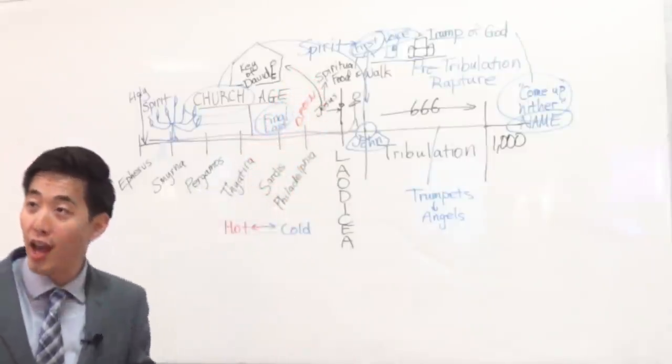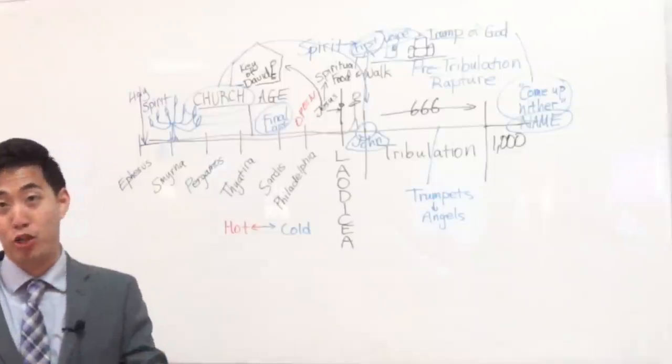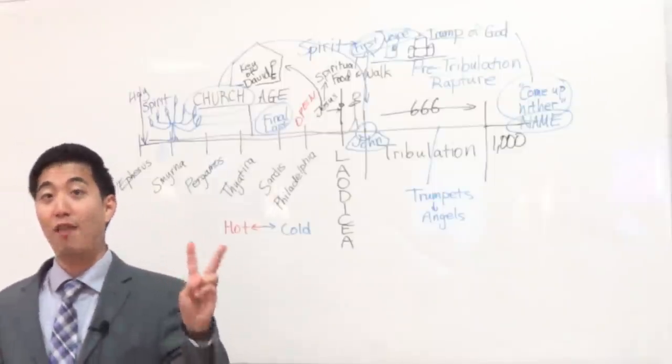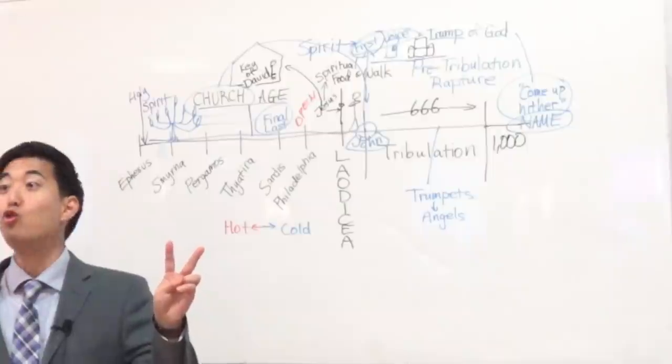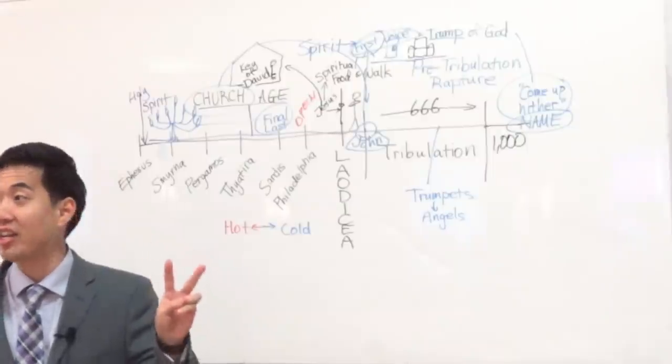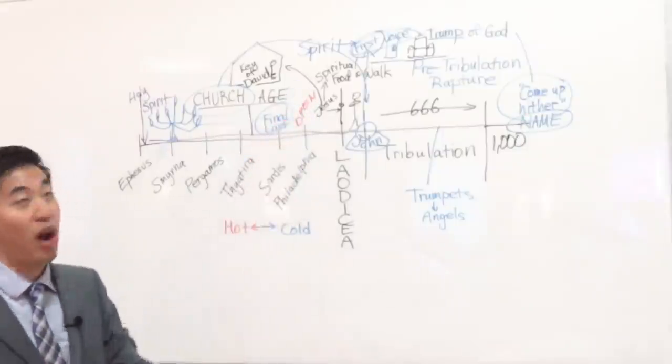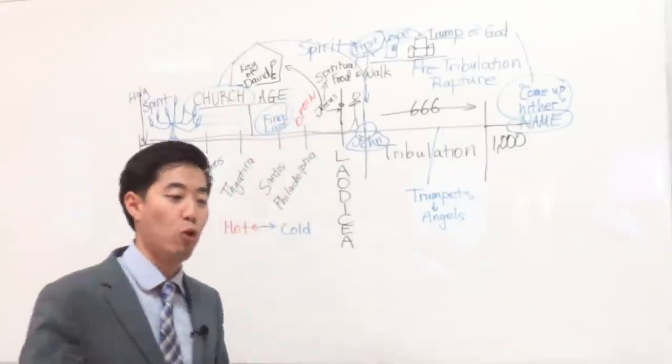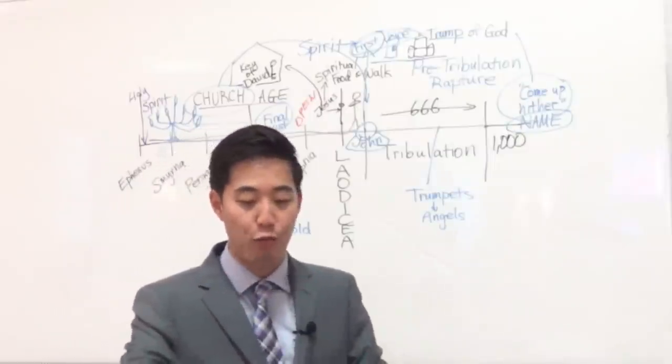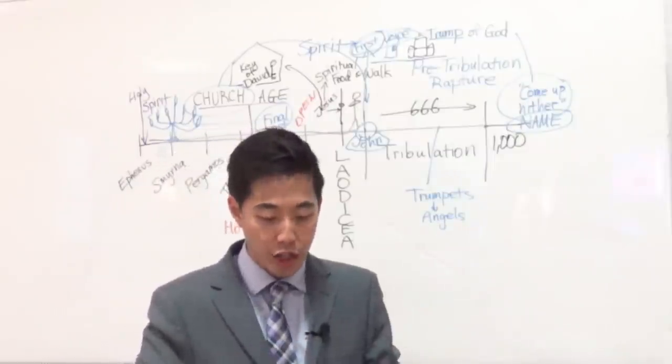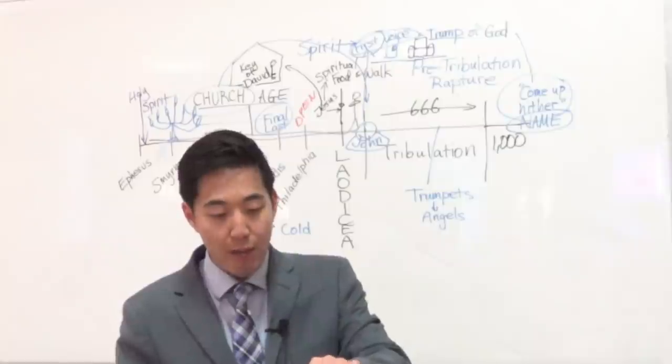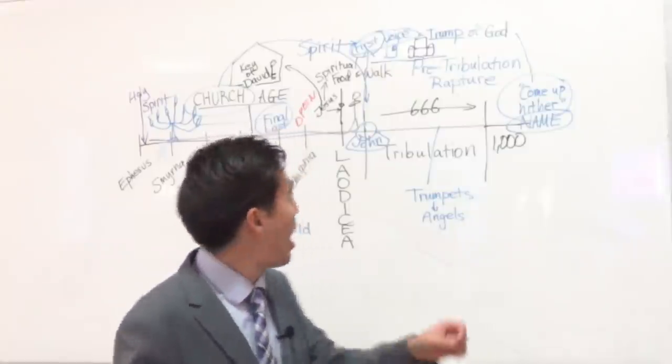Doesn't this make sense now? Acts chapter 2, the Holy Spirit came down upon the church. The church was down here, and all of a sudden, you're up there? Isn't this pre-tribulation rapture? Now, if you don't think there's a pre-tribulation rapture at the two first verses of Revelation chapter 4, you weren't reading and studying your Bible. This is more than convincing proof.